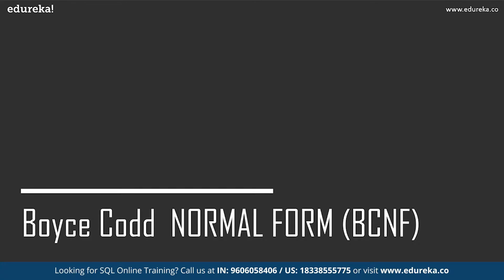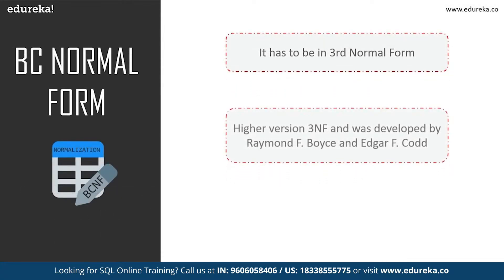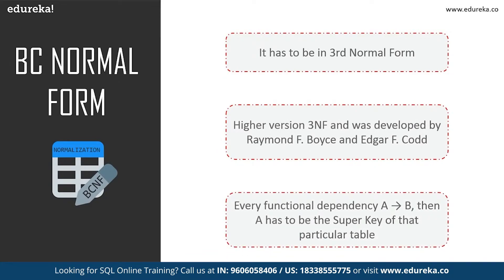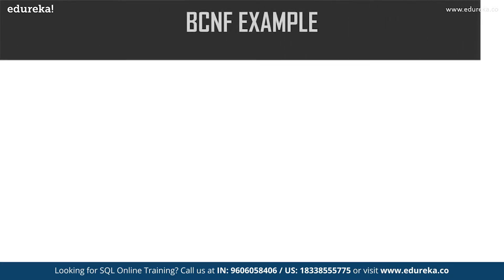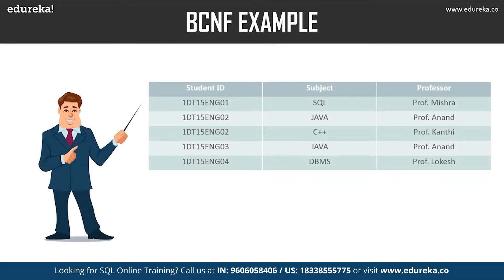Next is Boyce-Codd Normal Form, also known as 3.5 Normal Form. It is the higher version of Third Normal Form, developed by Raymond F. Boyce and Edgar F. Codd, to address certain types of anomalies not dealt with by Third Normal Form. Before proceeding to Boyce-Codd Normal Form, the table must satisfy Third Normal Form. In Boyce-Codd Normal Form, for every functional dependency A implies B, A must be the super key of that table. A super key is a group of single or multiple keys which identifies rows in a table. In our example, one student can enroll for multiple subjects, there can be multiple professors teaching one subject, and for each subject a professor is assigned to the student. All normal forms are satisfied except Boyce-Codd Normal Form.